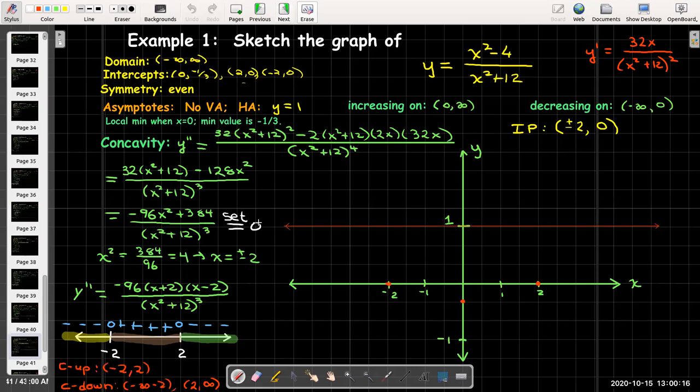Let me go ahead and draw in my horizontal asymptote, the y equals 1. Let me go ahead and plot my intercepts, which happen to be my local min and also my inflection points. Let's use the information about the concavity and the local min. I know that in the middle I'm going to be concave up, and in fact I'll have a local min on the y-axis. I'll be concave down.